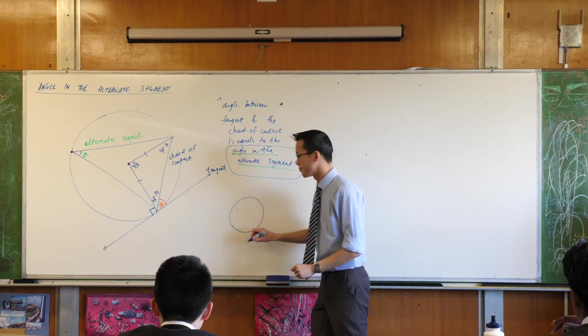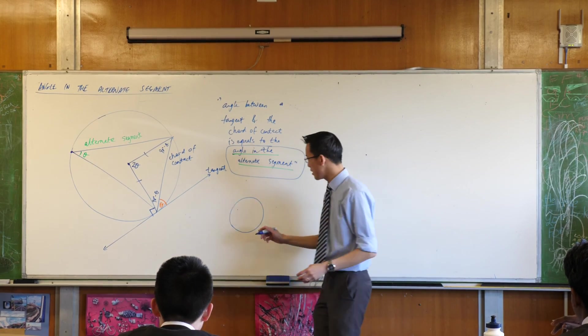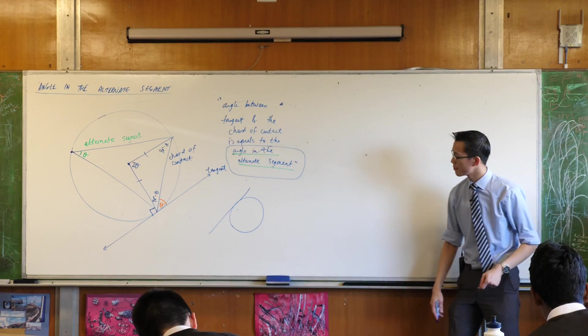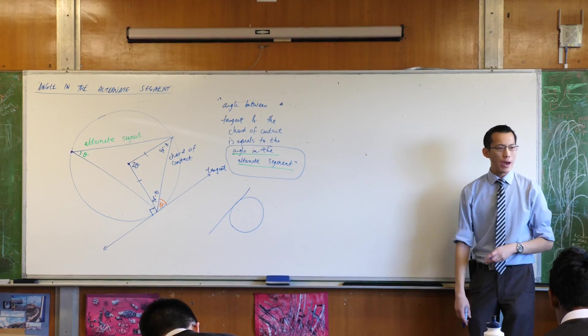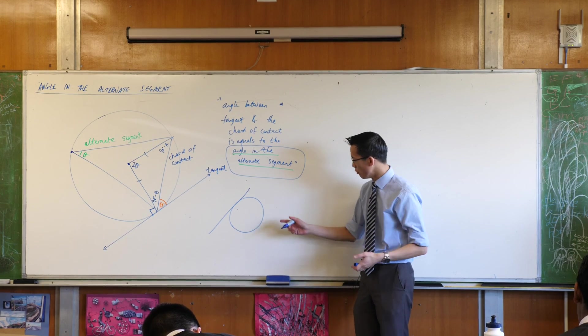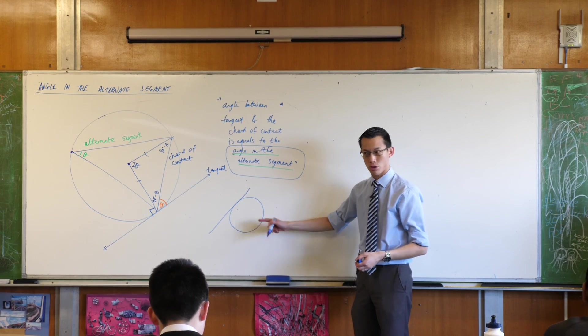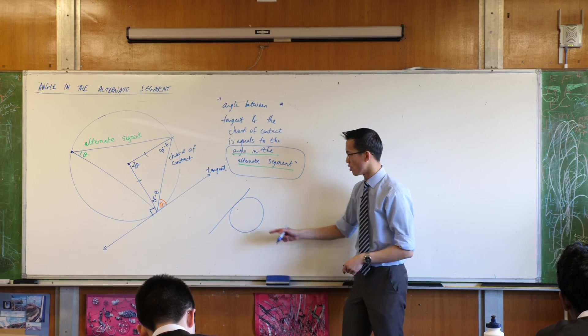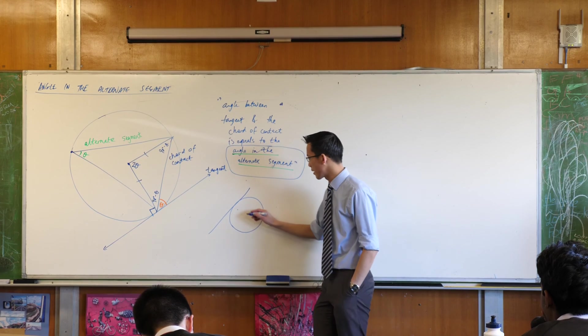Maybe draw it a little smaller. Draw a tangent, any tangent. Like that. And the way you can do this is draw actually a triangle inside the circle, a triangle that touches all the points of the circumference, so long as it touches the point of contact as well. Any triangle you like.